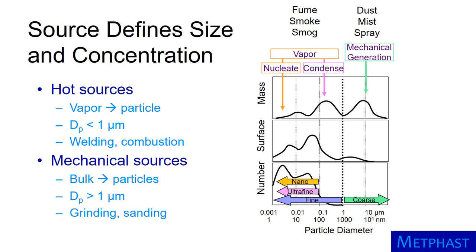In contrast, mechanical sources such as grinding and sanding break apart a bulk material into coarse particles that are primarily larger than one micrometer. These aerosols we know as dust, mist, and spray. They often dominate particle mass distributions but contribute little to number concentration.